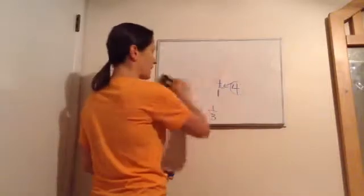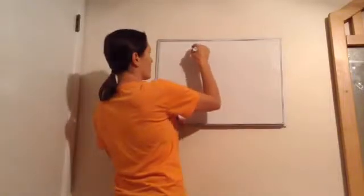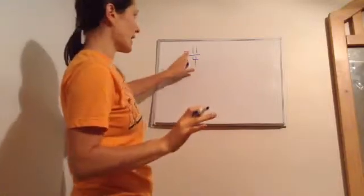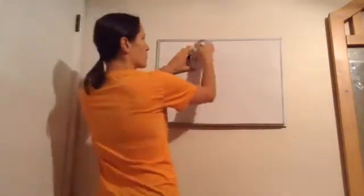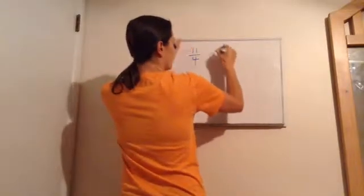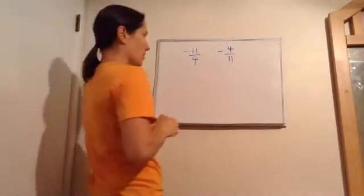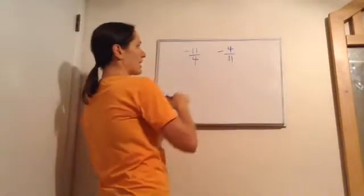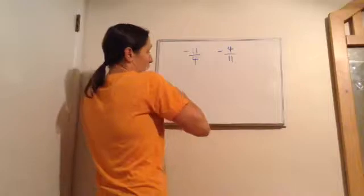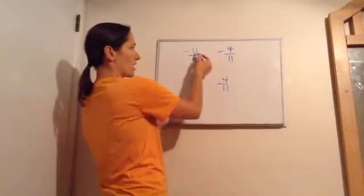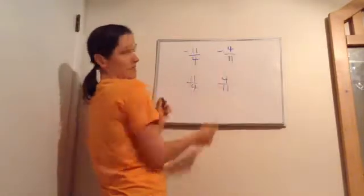Now what about negative numbers — negative reciprocals? For example, negative eleven-fourths. You don't even pay attention to the negative; you're still going to find the reciprocal of just the numbers. The reciprocal of eleven-fourths is four over eleven, and since it's a negative number, it stays negative. So negative eleven-fourths becomes negative four over eleven.